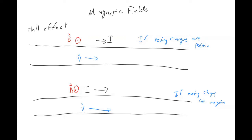So there would be a magnetic force in the wire pointing down. If you do the same right-hand rule in the bottom picture, but now the charges are negative, you have to flip the direction of the force. So in the bottom picture, your magnetic force would be pointed upward.